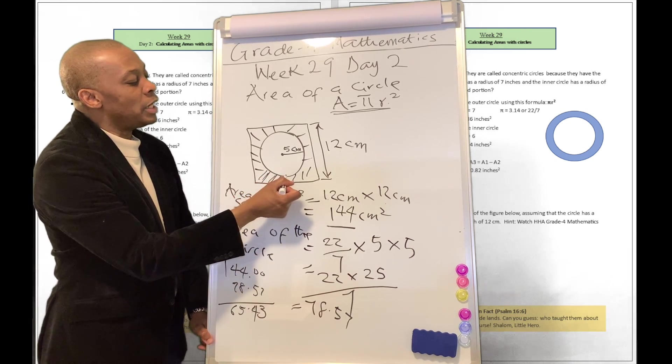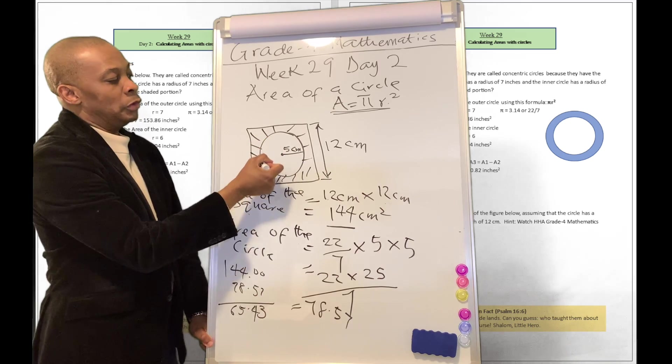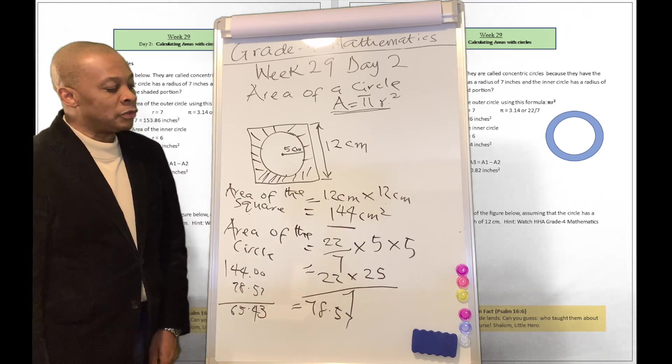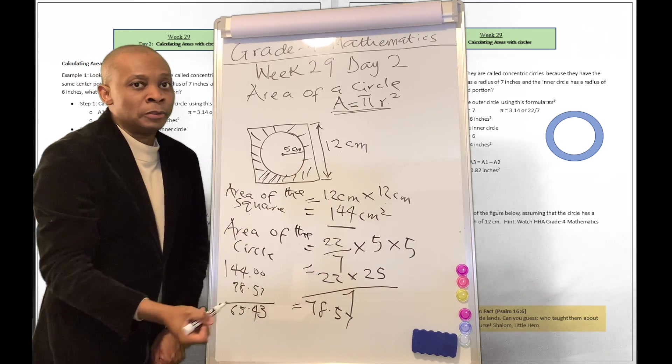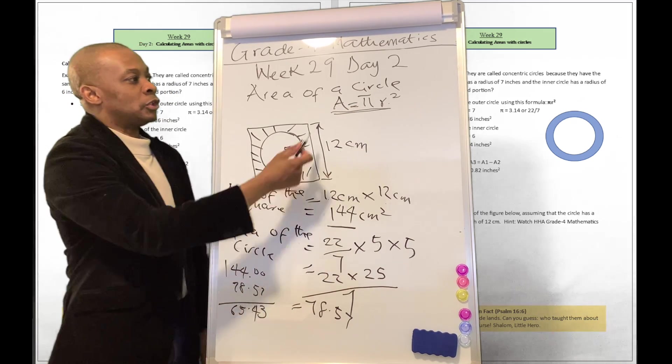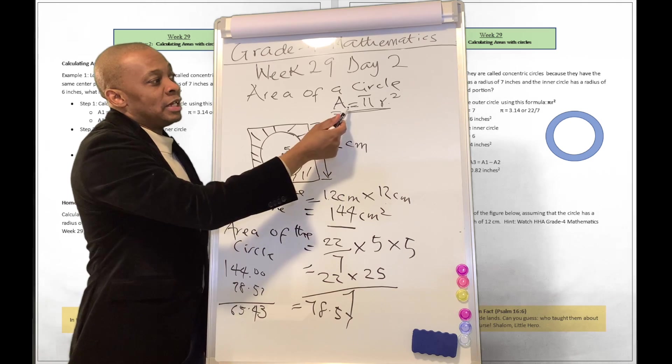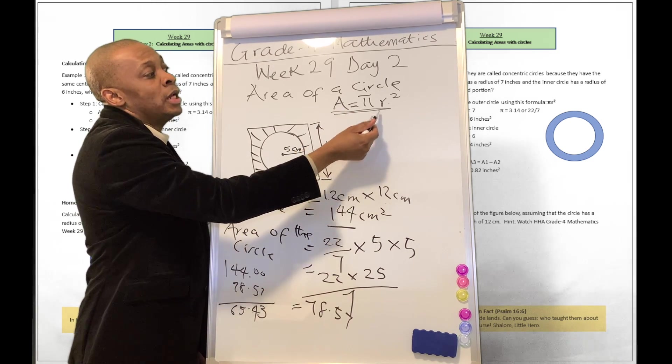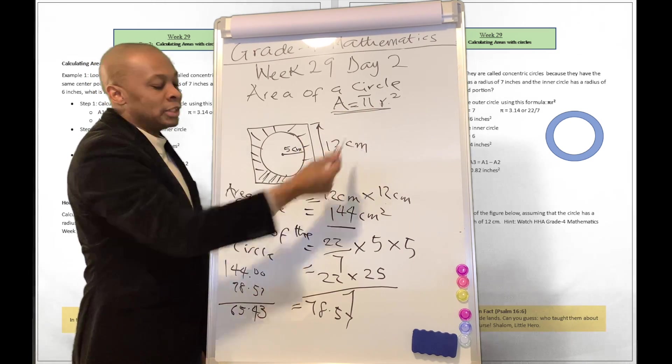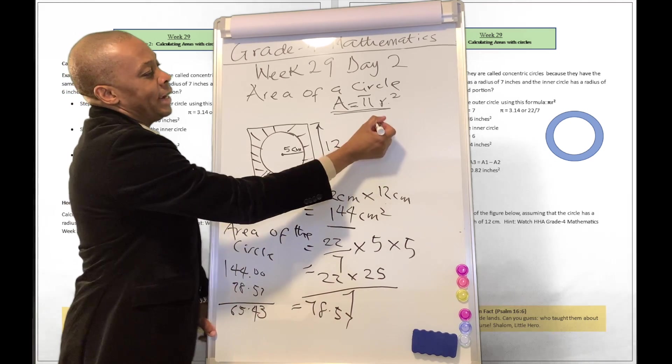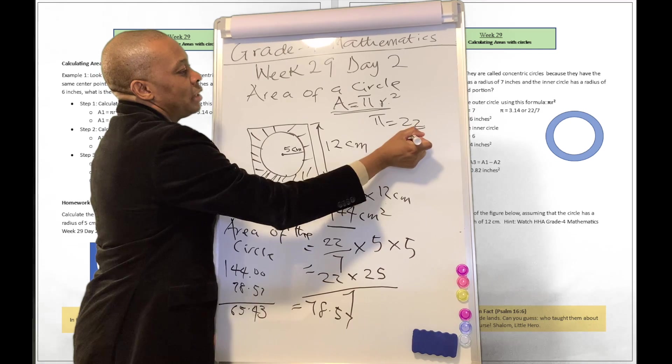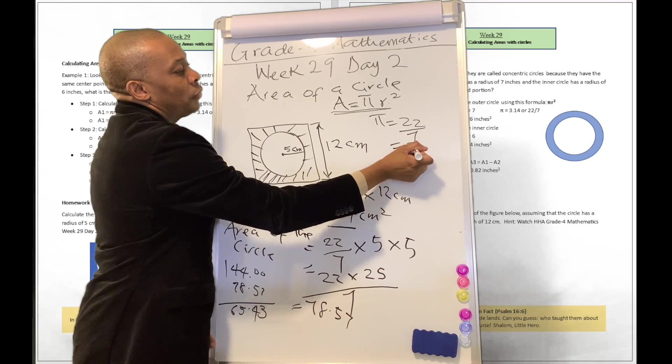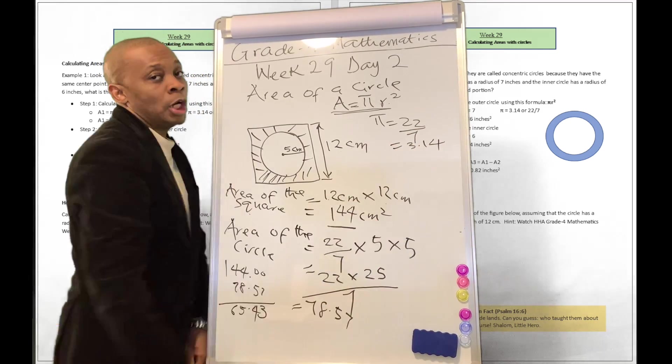Now, you're going to go ahead and calculate the area of this circle over there. What's the area of the circle? Well, the area of the circle may be calculated by this formula that I was talking about just a few moments ago. And that's going to be equivalent to pi r squared. So your pi is a mathematical constant, which is equivalent to 22 divided by 7, or 3.14.